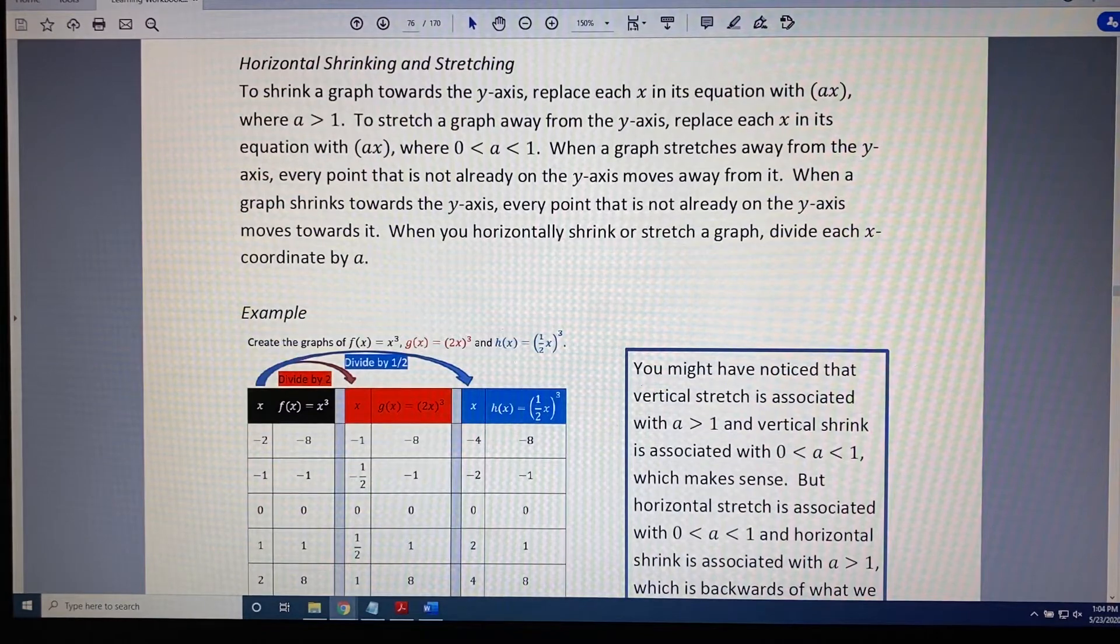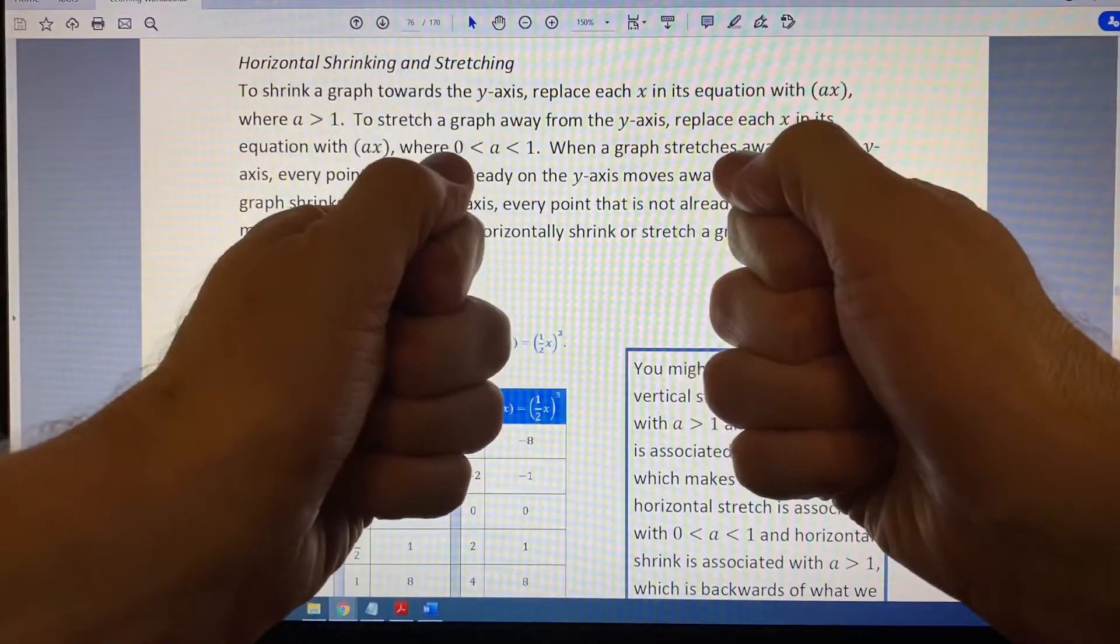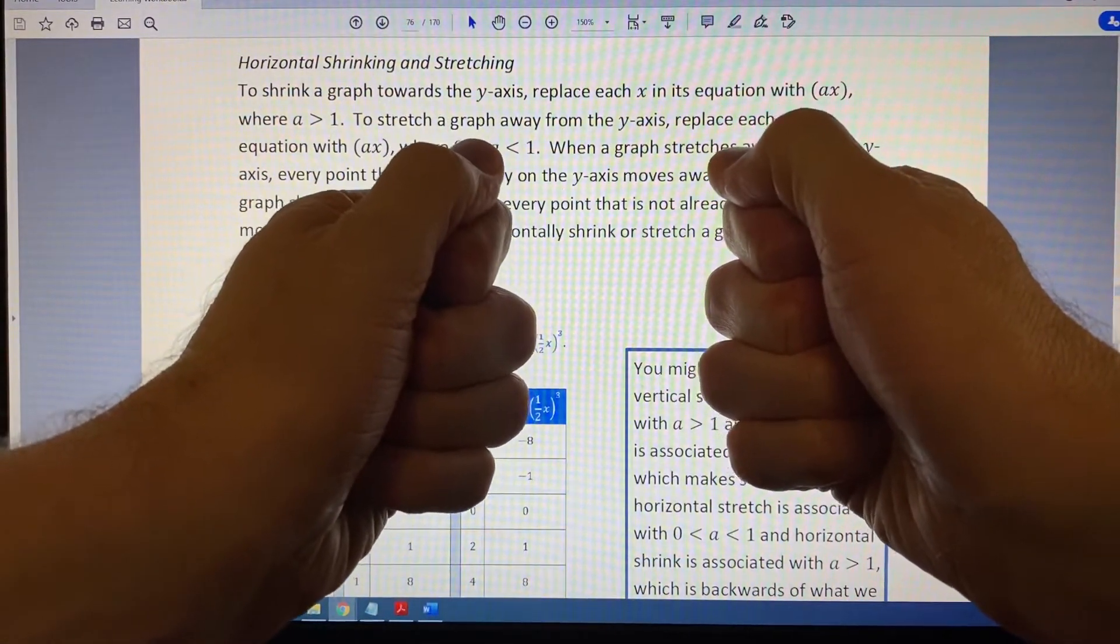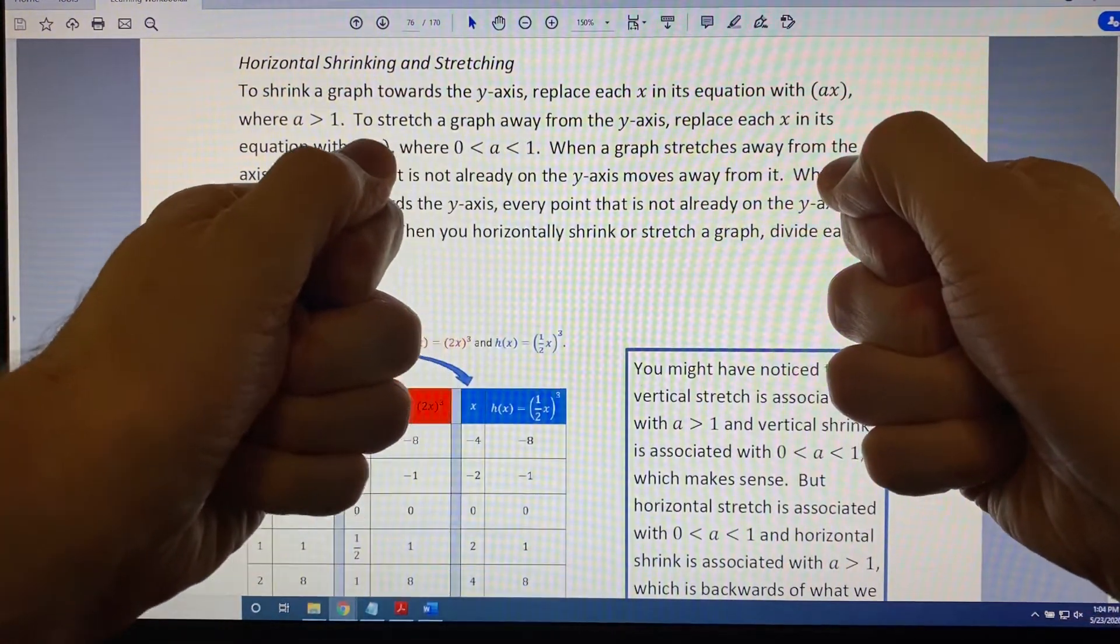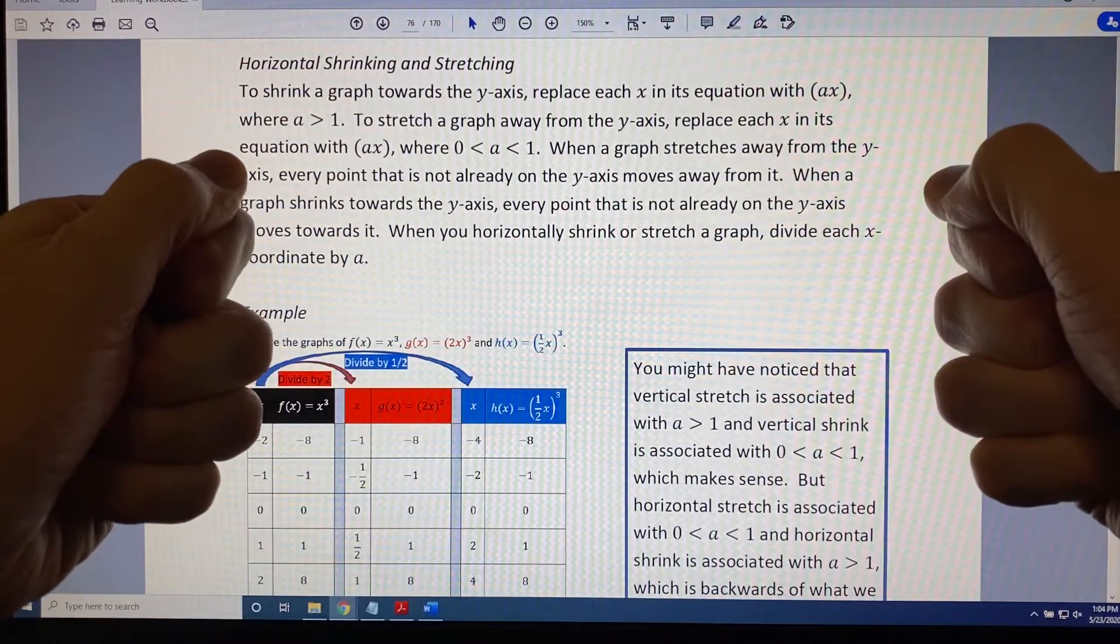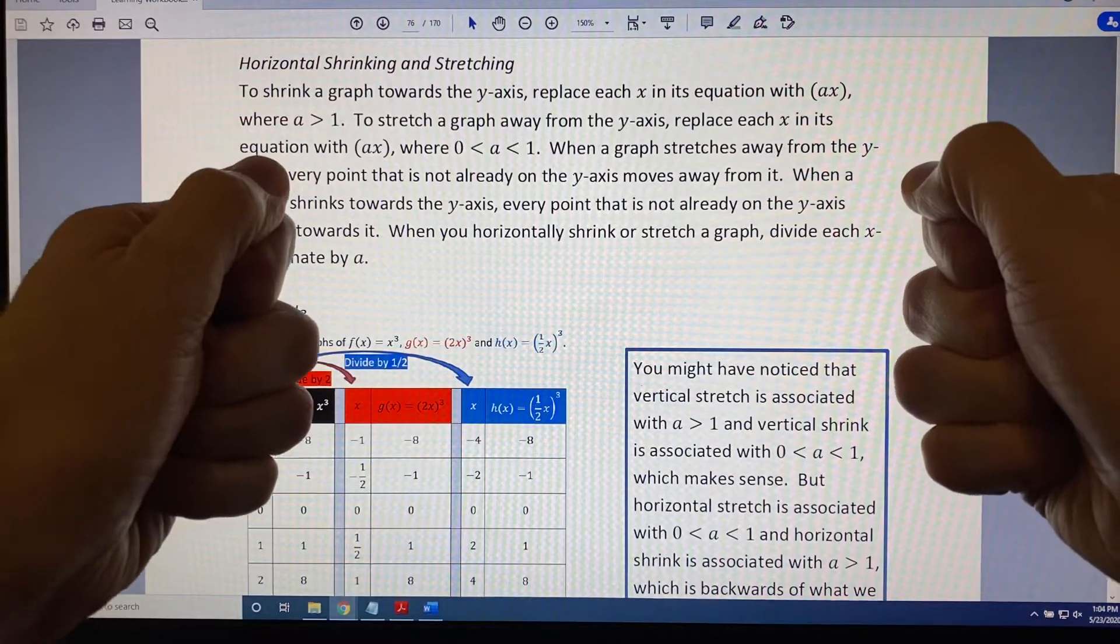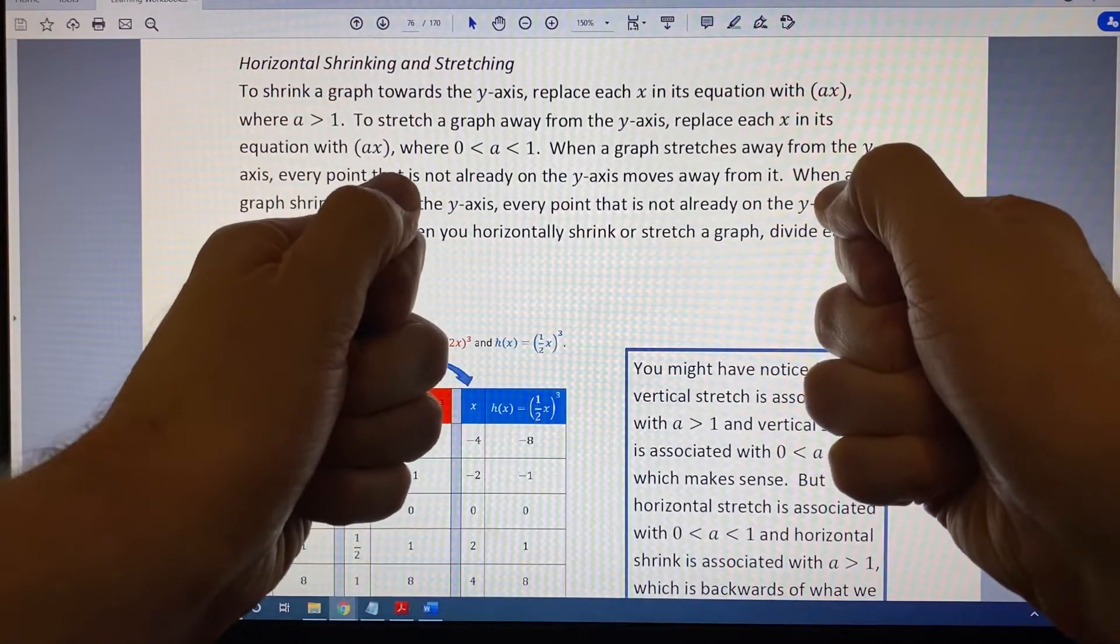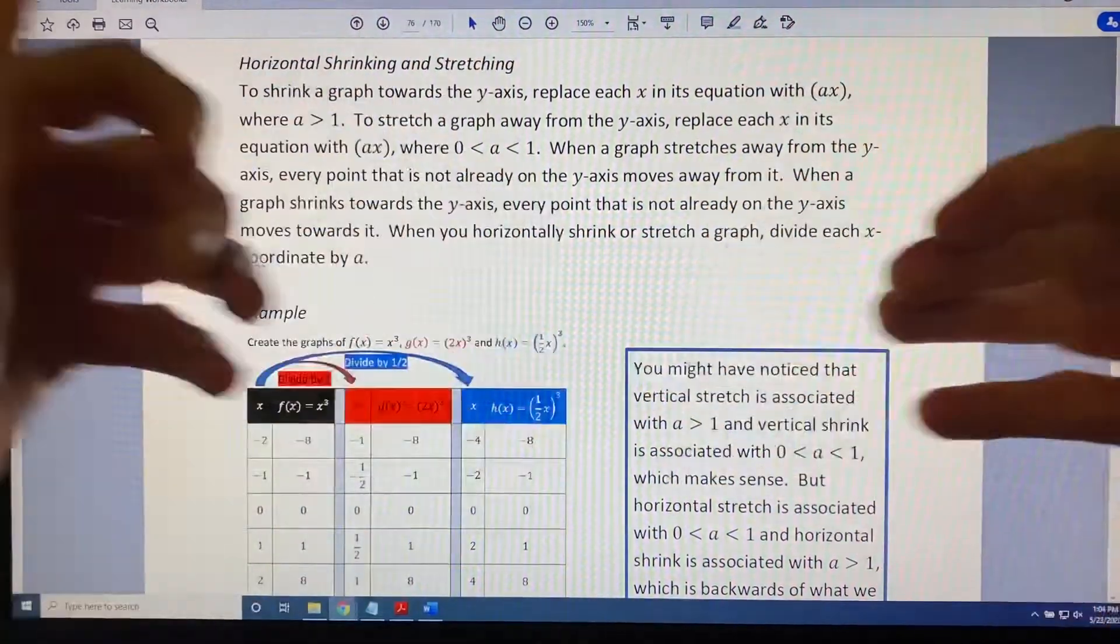Let's give a visual on what I mean by horizontal shrinking and stretching. Imagine that my two hands are holding a graph. A horizontal stretch would be if I pulled the graph like this, where all of the points are getting farther away from the y-axis. If I were to shrink horizontally, I am going to allow that tension to release, and all of the points are moving horizontally towards the y-axis.